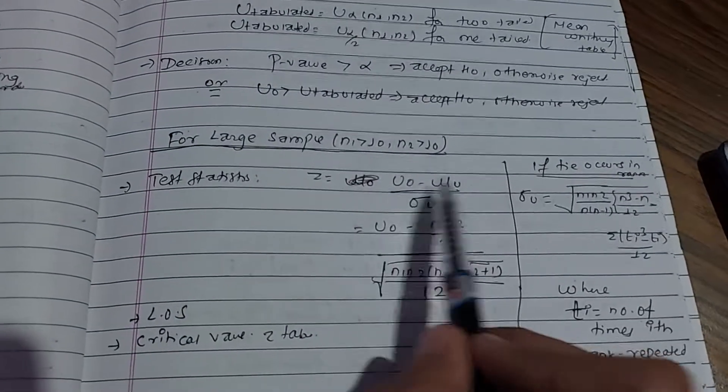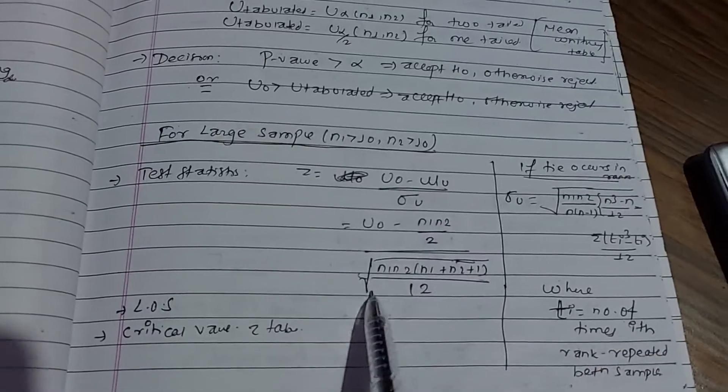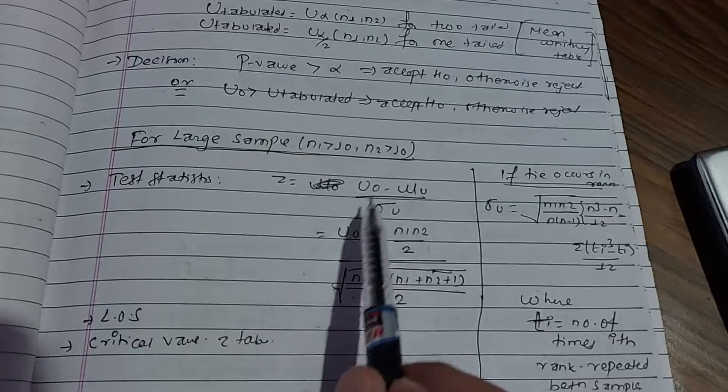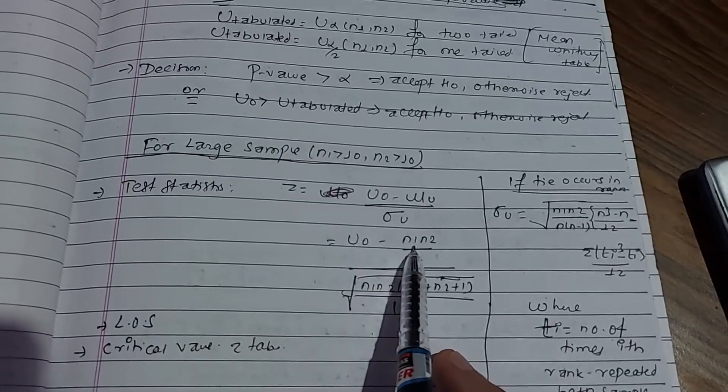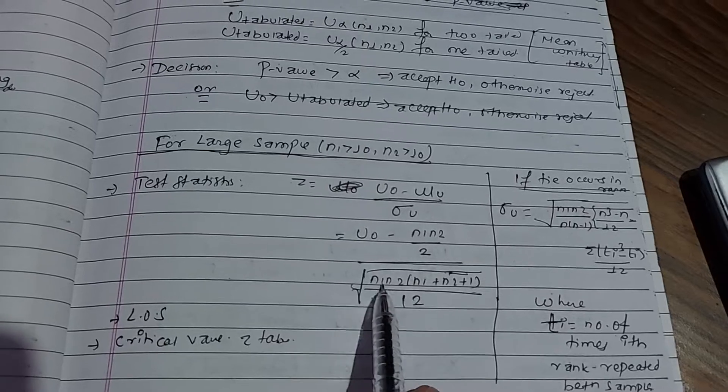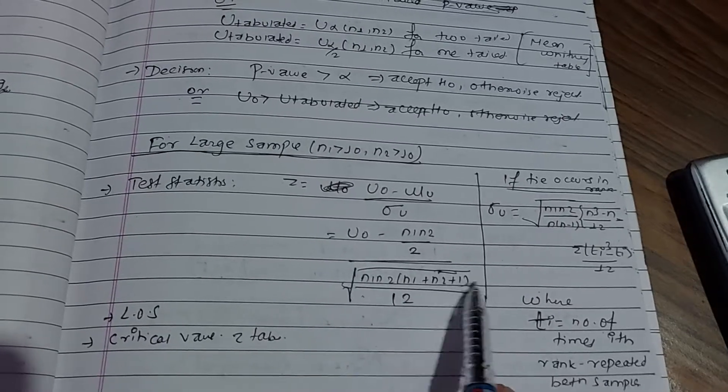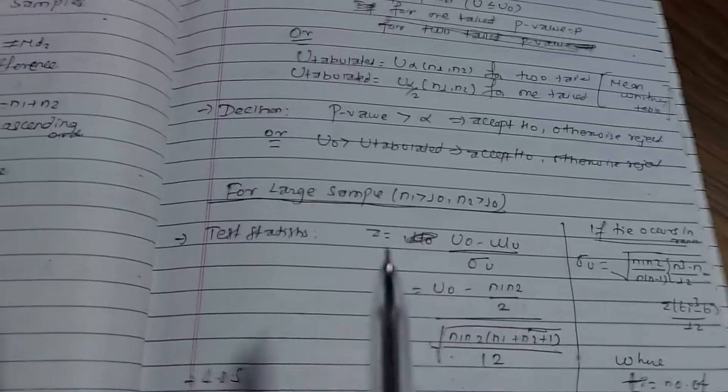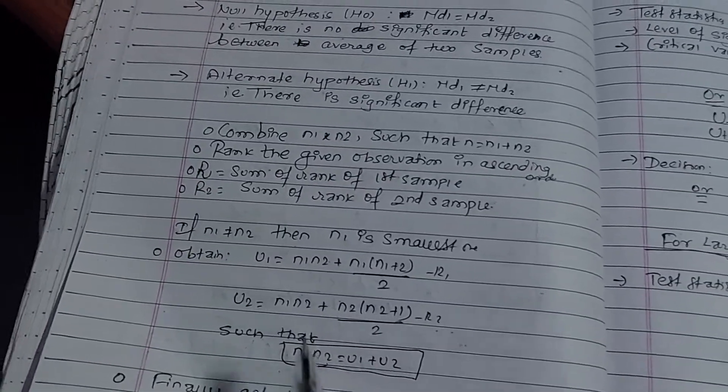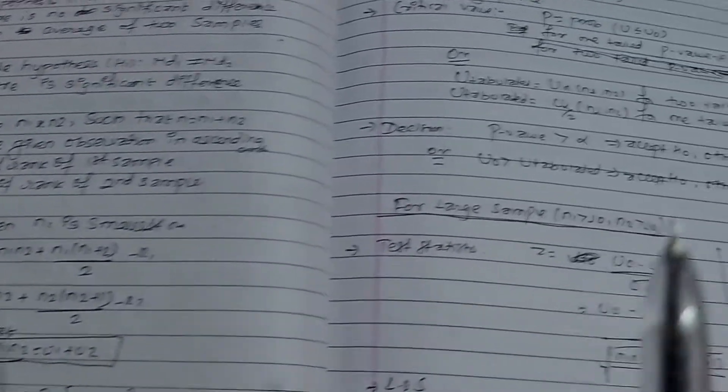The test statistic formulas are: U = n1×n2 + n1(n1+1)/2 - R1, where n1 is the smaller sample and R1 is the sum of ranks. These formulas are important for small sample sizes.